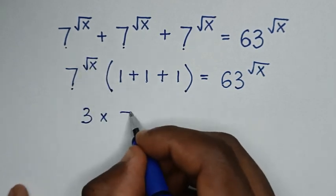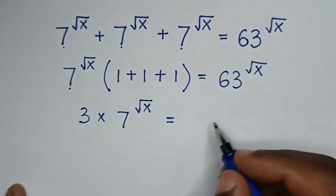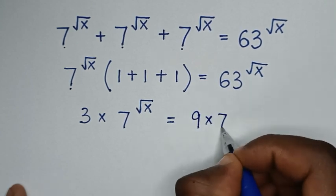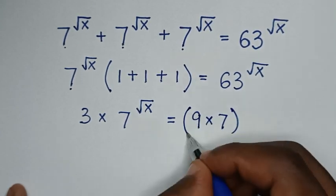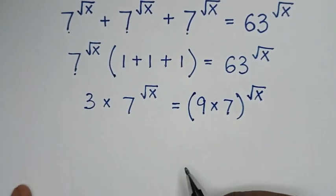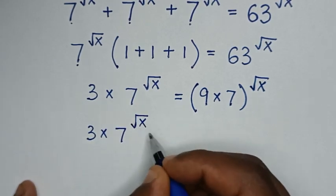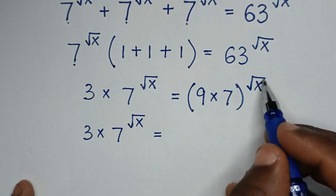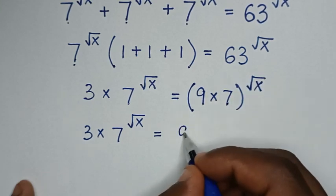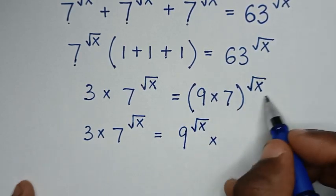So, 3 times 7 power square root of x is equal to 63 power square root of x. Now, 63 is the same as 9 times 7, so we rewrite the right side as 9 times 7, with the power of square root of x applied to the bracket. Taking the power inside gives us 9 power square root of x times 7 power square root of x.